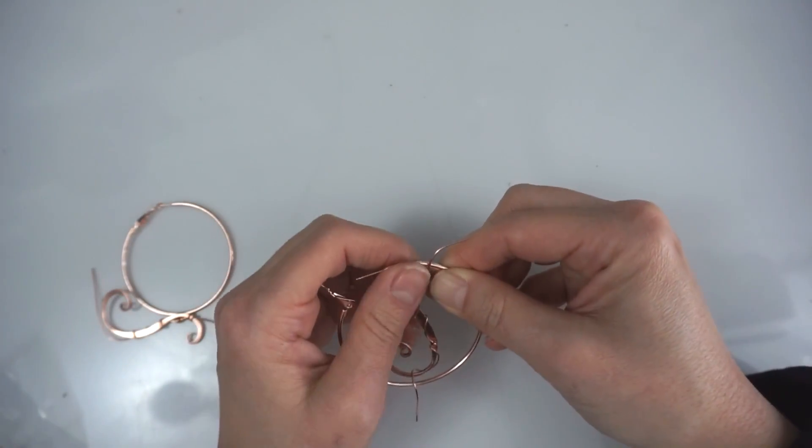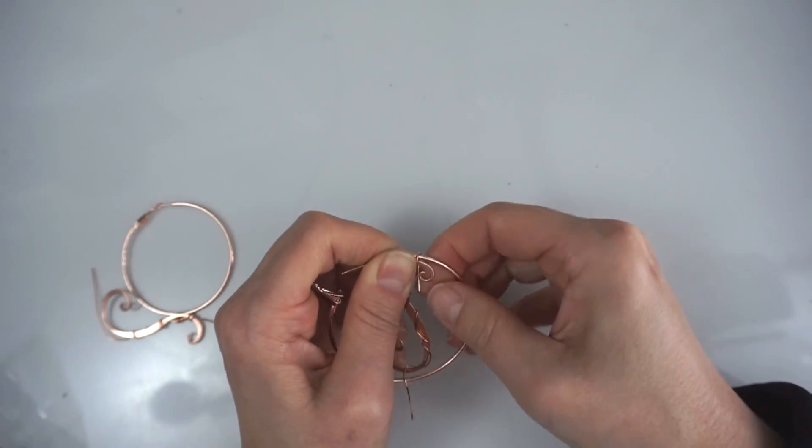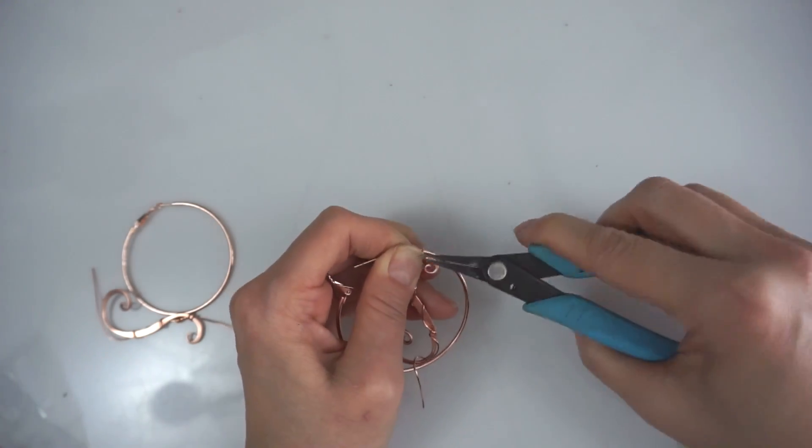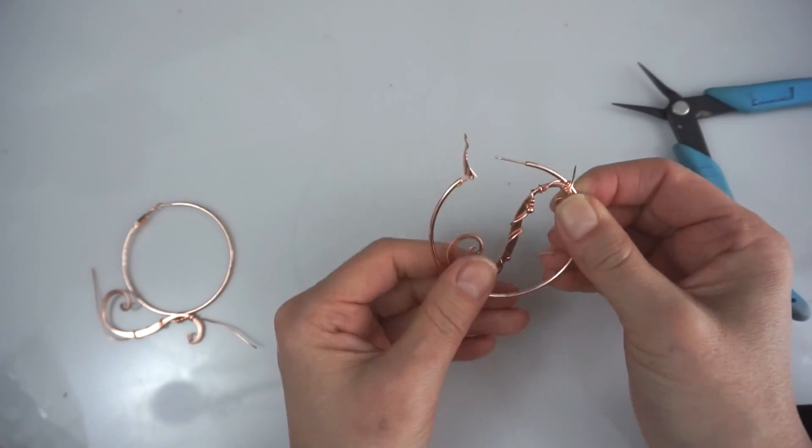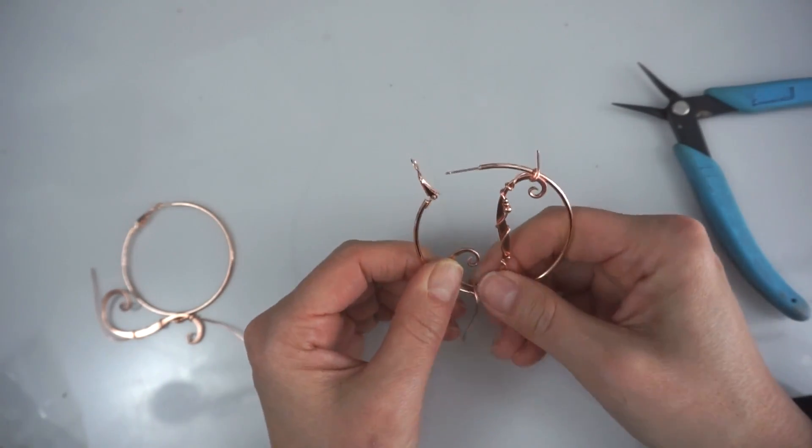After the wire part is done, time to connect them to the hoop. Use the left tail of 20 gauge wire to coil around both hoop and base wire together a couple of times.